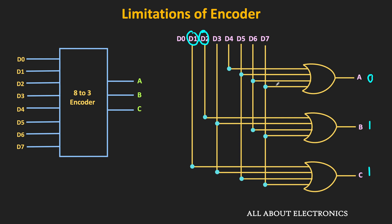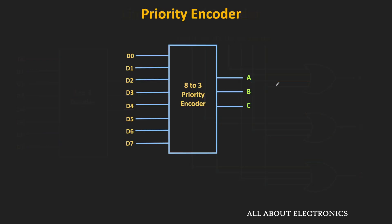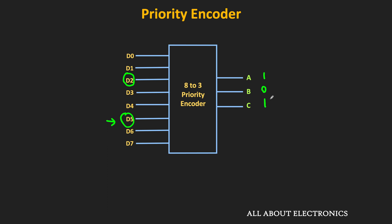To avoid this, we need to assign priorities to the inputs. For example, when more than one input is high, the input with the higher subscript has higher priority and is considered active. Such encoders are called priority encoders. If D1 and D2 are both high, D2 has higher priority and the output is 010. If D2 and D5 are both high, D5 has priority and the output is 101. In a priority encoder, even with multiple high inputs, we always get a valid specific code based on priority.